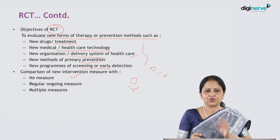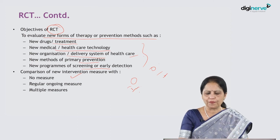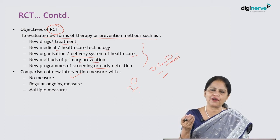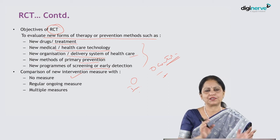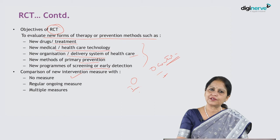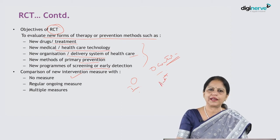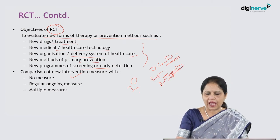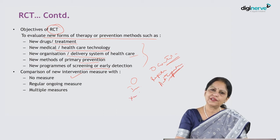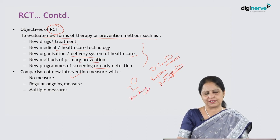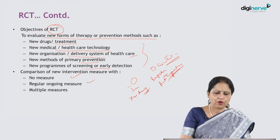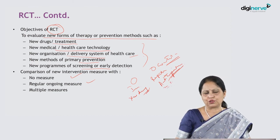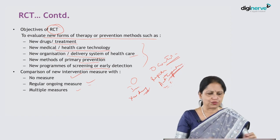In the control group, participants continue their regular treatment — for example, whatever antihypertensive they are currently taking. In the intervention group, the new antihypertensive being tested is given. Additionally, multiple treatment measures can be tested simultaneously and compared against each other.